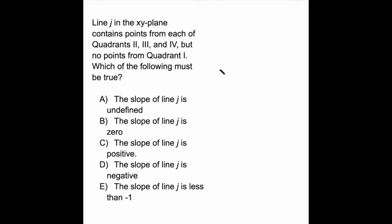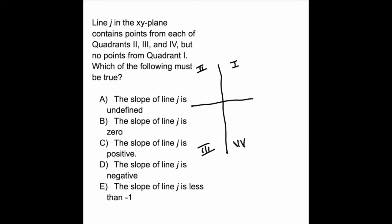The way to see this is to quickly draw the XY coordinate plane and remember where the quadrants are — there's 1, 2, 3, and 4. We have a line that goes through quadrants 2, 3, and 4, but not through 1. What does that kind of line look like? It looks like that.